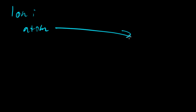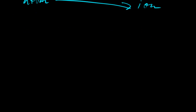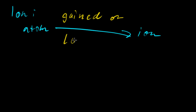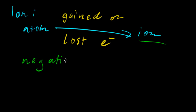Well, we have an atom and it becomes an ion, but how does this happen? Well, it's either gained or lost electrons. And there are two types of ions.